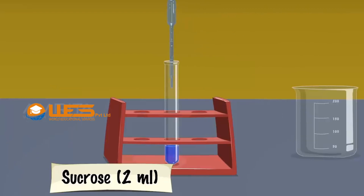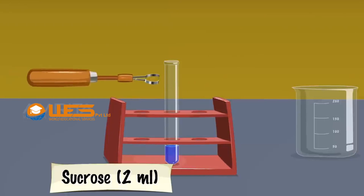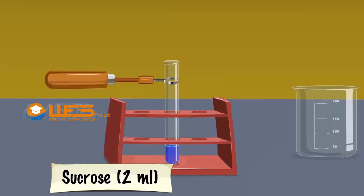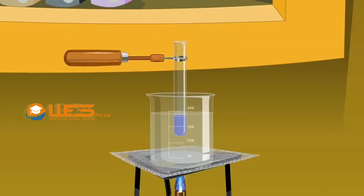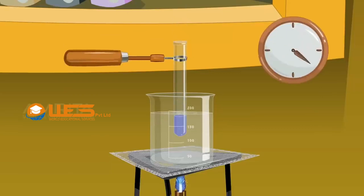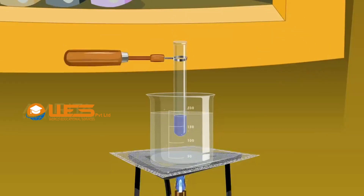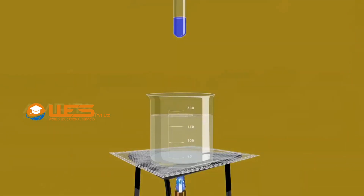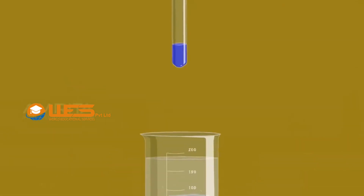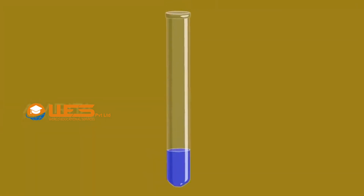The solution turns a deep blue colour. Remove the test tube from the rack using a test tube holder. Place it in a boiling water bath and heat for a few minutes. The colour remains the same. The test is negative, indicating that sucrose is a non-reducing sugar.